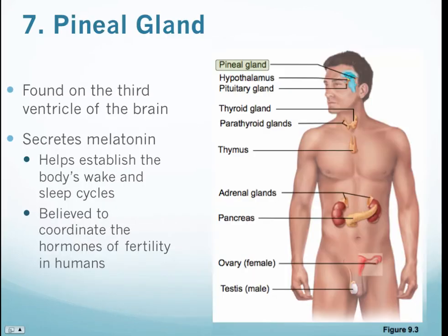The next endocrine gland is the pineal gland, found on the third ventricle of the brain — most posterior, close to the epithalamus. Note: the pineal gland is posterior, the pituitary gland is more anterior and directly connected to the hypothalamus. Students often confuse these three endocrine glands on quizzes and exams.